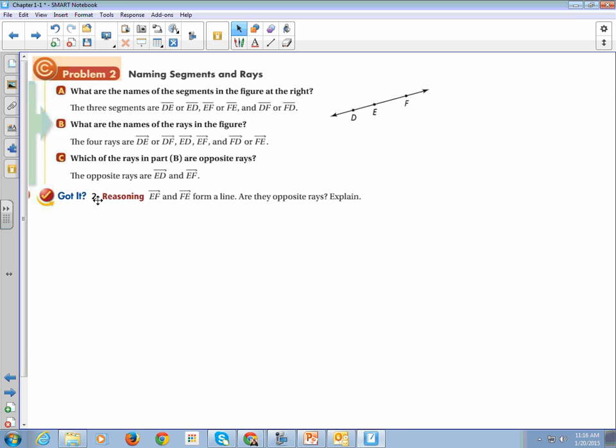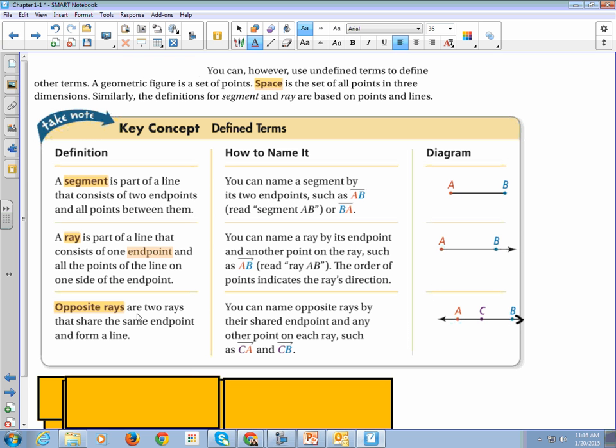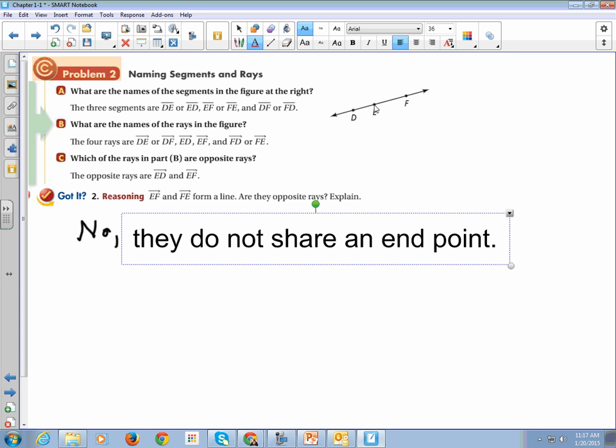Let's look at this got it to make sure we got it. EF and FE form a line. Are they opposite rays and explain? EF and FE form a line. Are they opposite rays? They are not because they do not share an endpoint. So when you look at the definition of opposite rays, opposite rays are two rays that share the same endpoint and form a line. So they need to share that endpoint and EF and FE don't share an endpoint.